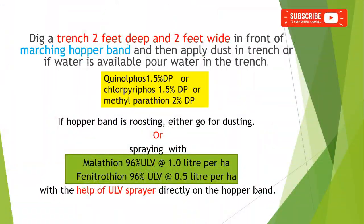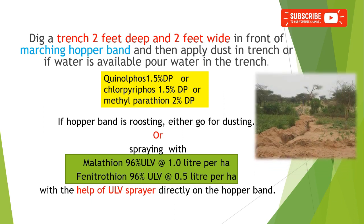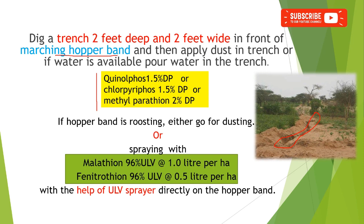Another method of management is digging a trench of about two feet deep and two feet wide in front of the marching hopper band, then applying dust such as Phenthoate 1.5 percent, Chlorpyrifos 1.5 percent, or Methyl Parathion 2 percent dust formulation inside these trenches. Alternatively, if water is available, pour water into these trenches.